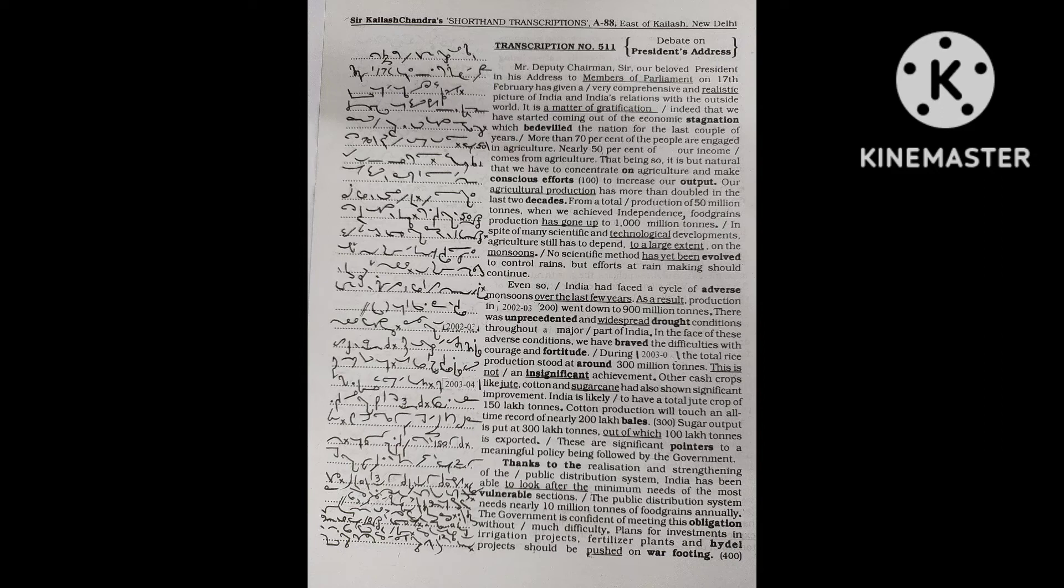These are significant pointers to a meaningful policy being followed by the government. Thanks to the realization and understanding of the public distribution system, India has been able to look after the minimum needs of the most vulnerable sections. The public distribution system needs nearly 10 million tons of food grains annually. The government is confident of meeting this obligation without much difficulty.